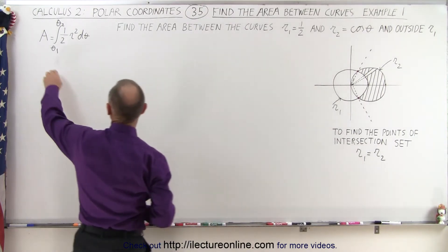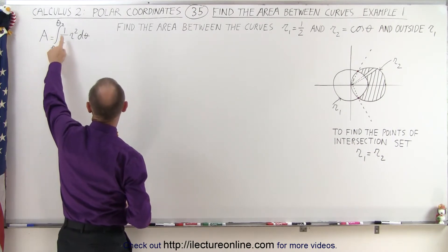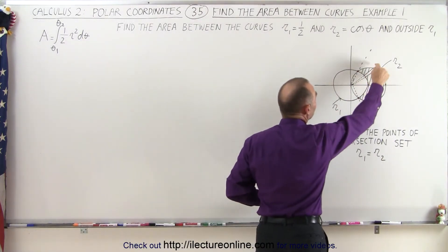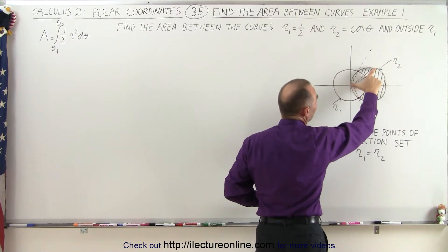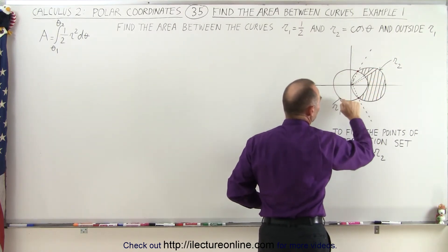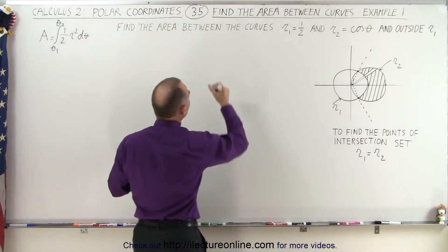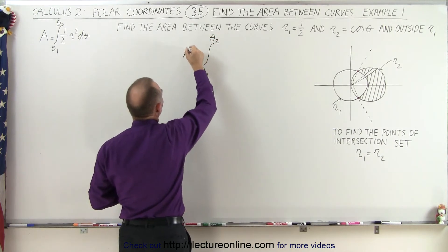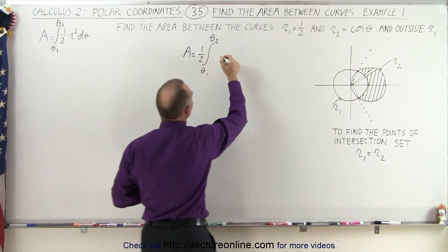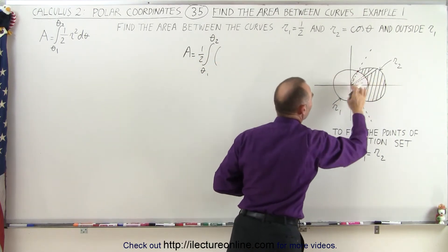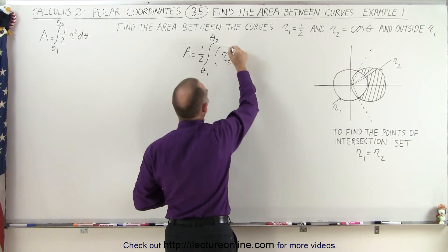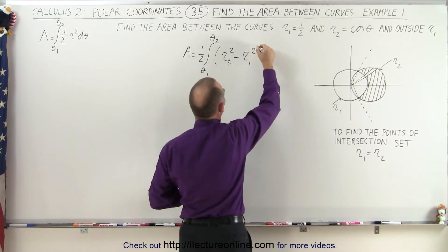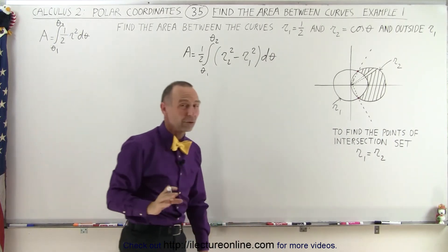We also know that the general formula for area is equal to the integral of one half times r squared dθ. In this case we need to find the whole area of the triangle and subtract the inner area from it. The whole area is defined by r2 and the inner area is defined by r1, which means our integral from θ1 to θ2 — still to be defined — is one half times r2 squared minus r1 squared, times dθ.